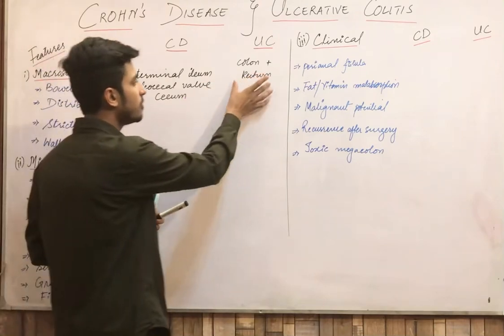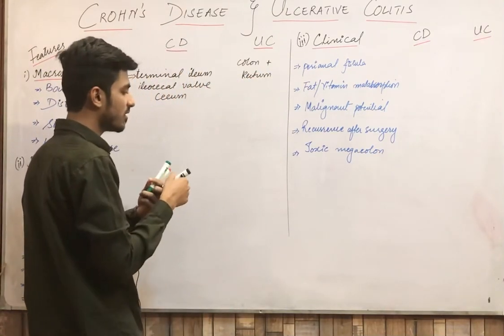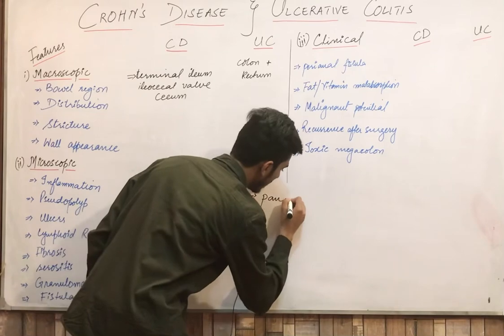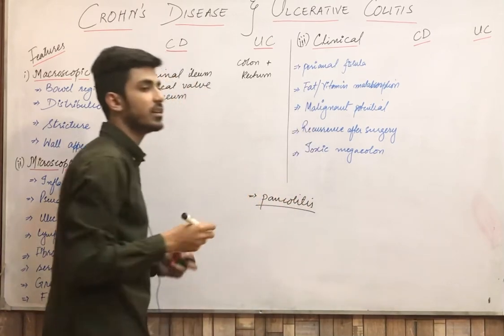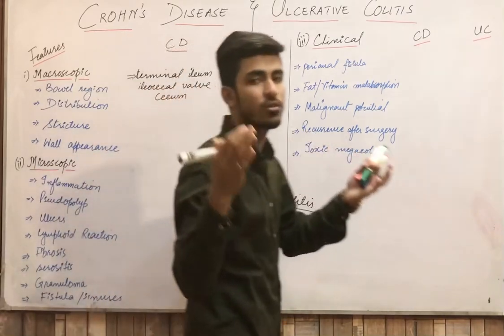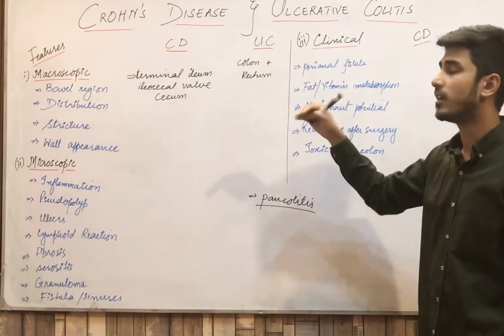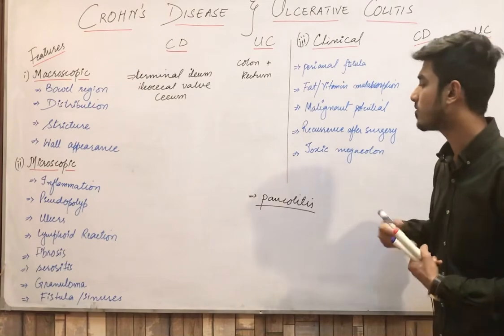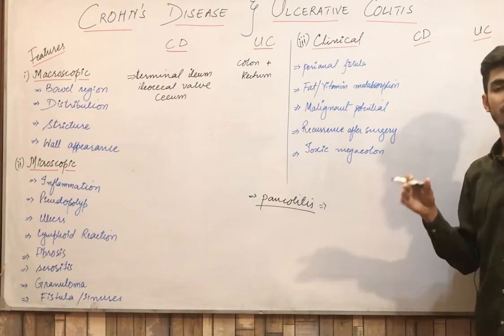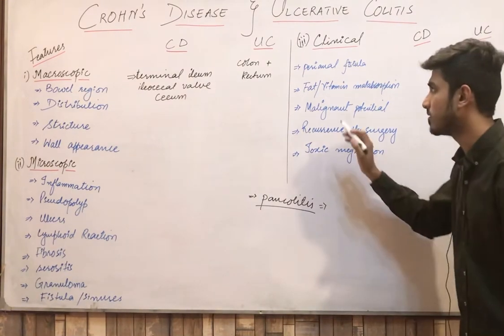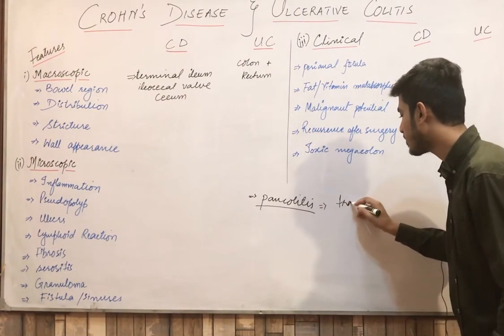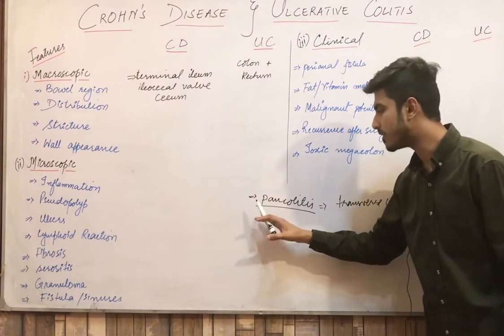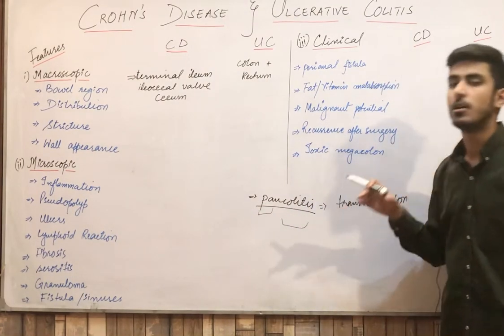I need to clarify certain terminologies regarding ulcerative colitis. The first term is pancolitis. Pancolitis means the whole entire colon is involved in ulcerative colitis. Ulcerative colitis occurring in the whole entire colon is called pancolitis. However, it does not actually extend beyond the transverse colon in most practical cases.